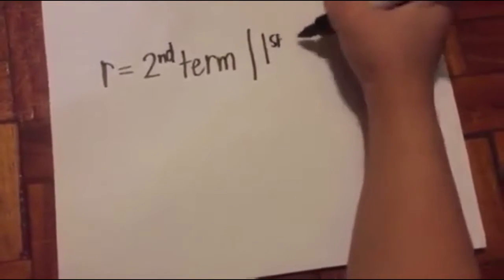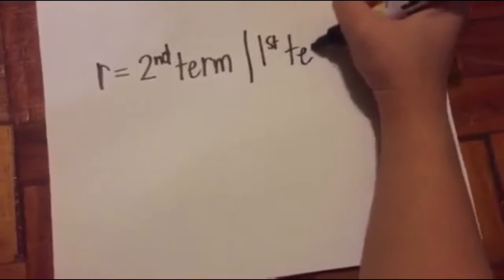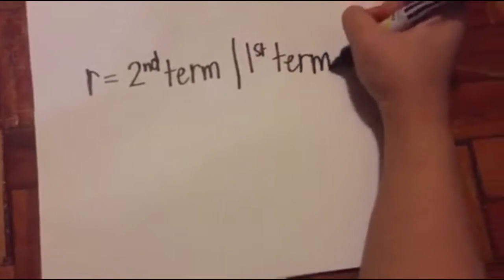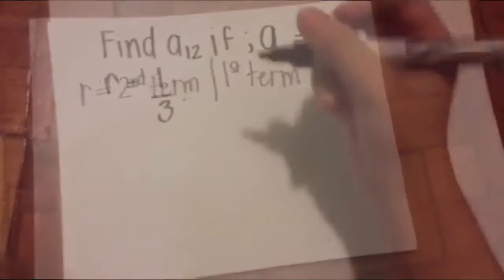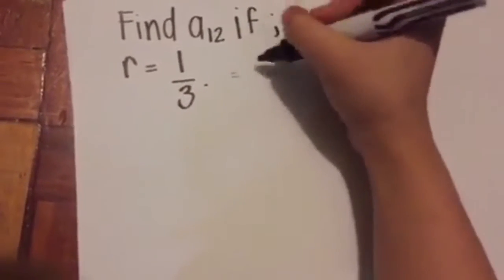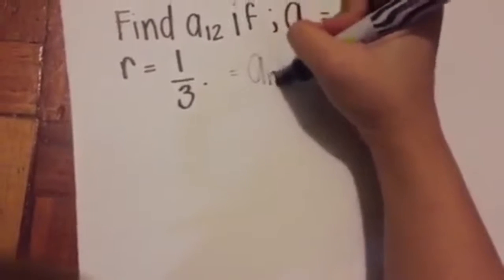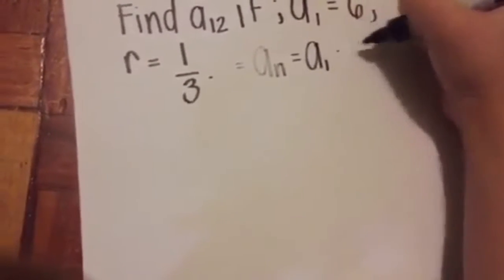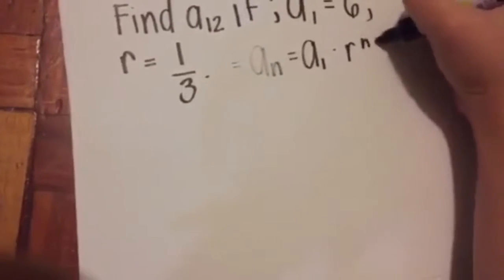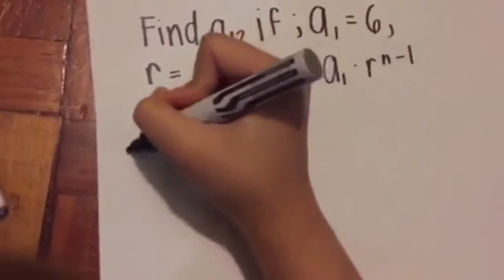You can also use your sixth term divided by your fifth term or your fifth term divided by your fourth term, as long as it's progressive. We have a problem: find a12 if a1 equals 6 and r equals 1 over 3.